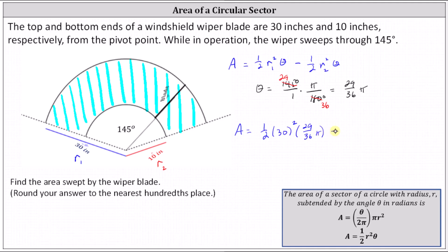And then we have minus one-half times the square of r sub 2, which is the square of 10 inches, times θ, which once again is 29 divided by 36 π radians.